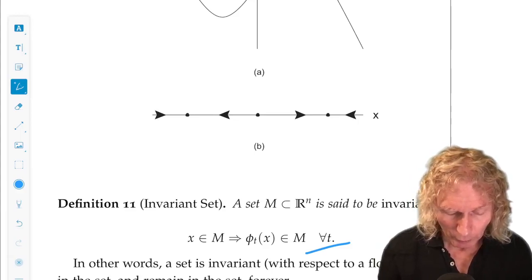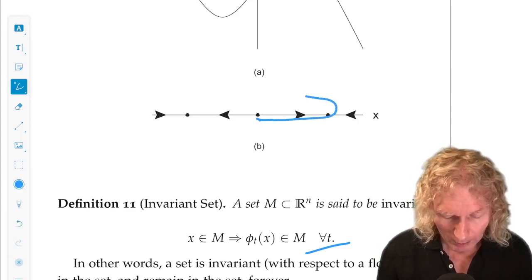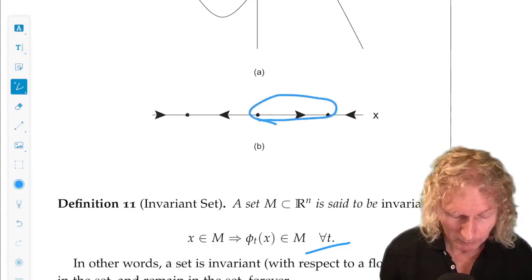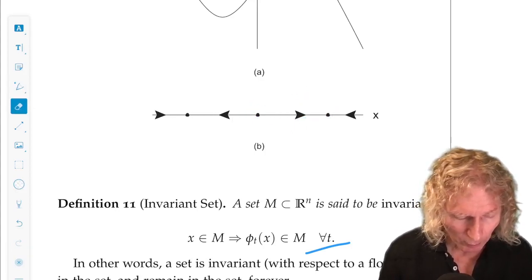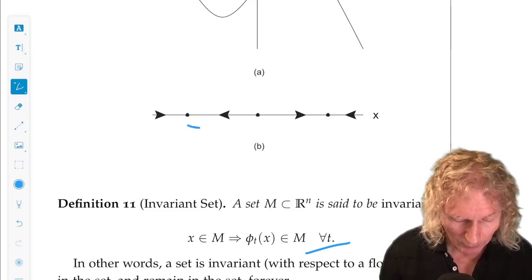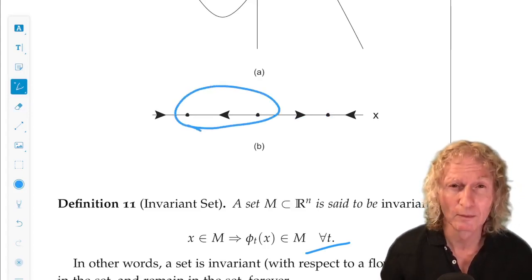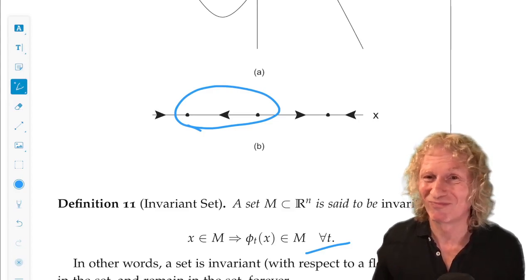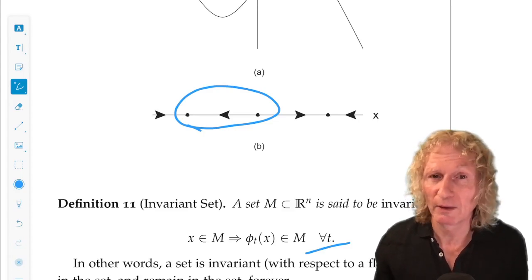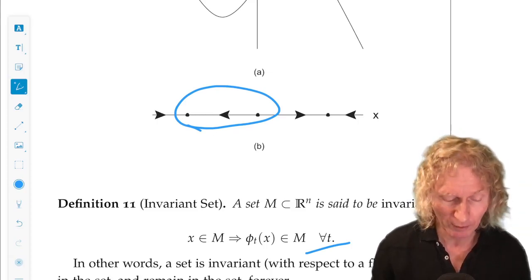Also, the intervals between zero and one, that's an invariant set. And the interval between minus one and zero, that's an invariant set. And the interval between one and infinity and minus infinity and minus one, those would be invariant sets.